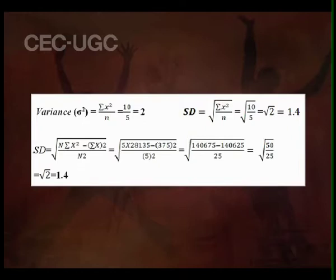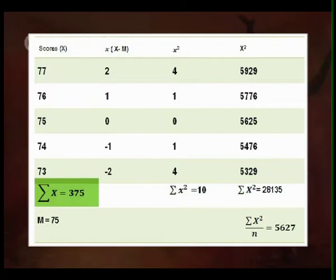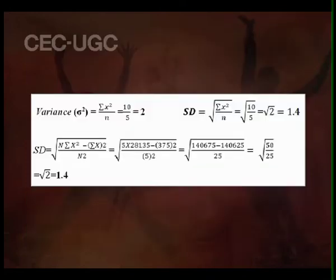Using the alternative raw score formula — the square root of (n times the sum of X-squared minus the sum of X whole-squared) divided by n — with n equal to 5, the sum of X-squared equal to 28135, and the sum of X whole-squared equal to 375² which is 140625, we get the same result for standard deviation and variance.